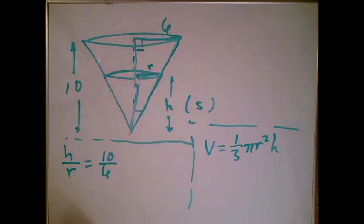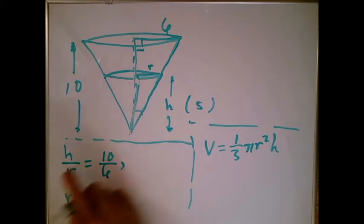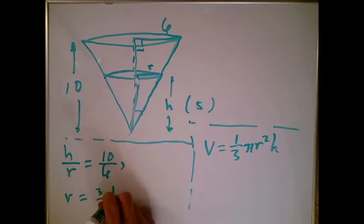And remember, we're trying to solve for r. So when I solve for r, r goes over there, 6 tenths goes over there. What I'm going to get is 3 fifths H, which means as the water is filling this up, r will always just be 3 fifths of H.